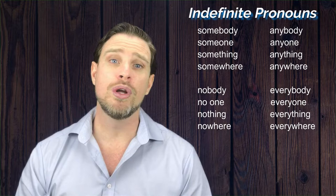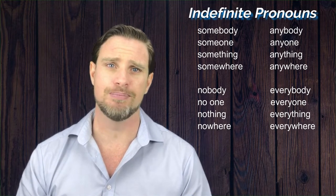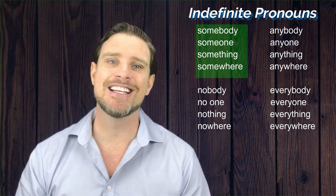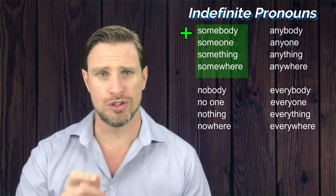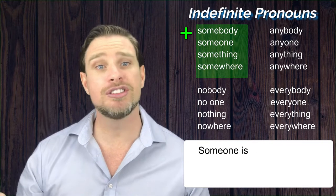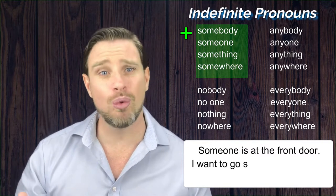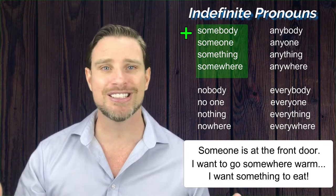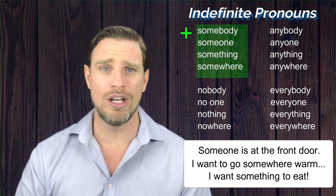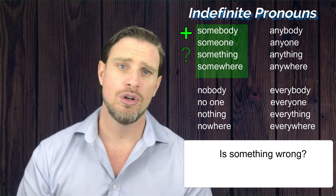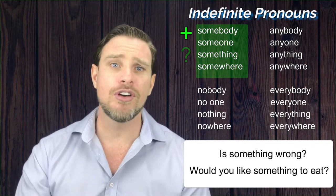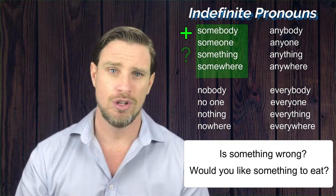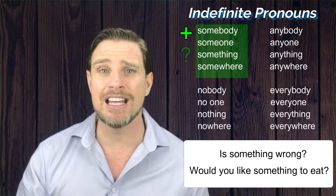The key rules are: we use all the pronouns beginning with 'some' — so somebody, someone, something, and somewhere — most often in positive clauses. For example: 'Someone is at the front door.' 'I want to go somewhere warm for Christmas.' 'I want something to eat. I'm starving.' All of these are positive sentences. Occasionally we can use these with questions: 'Is something wrong?' 'Would you like something to eat?' But the vast majority of the time, these pronouns with 'some' are used in positive sentences. We do not use these indefinite pronouns in negative clauses.